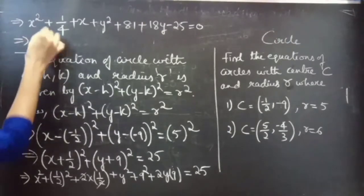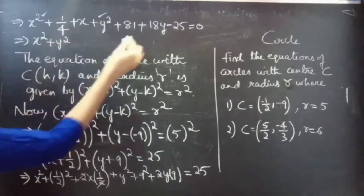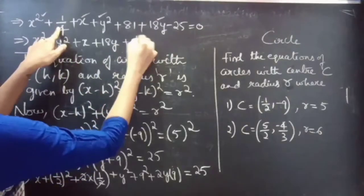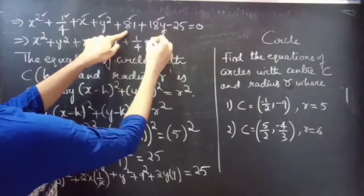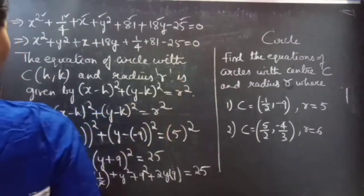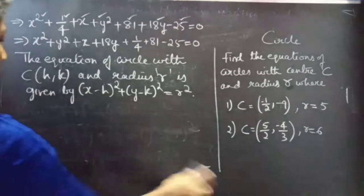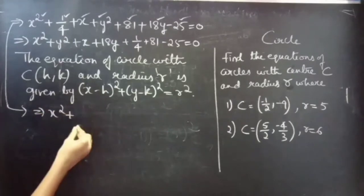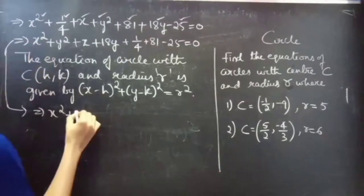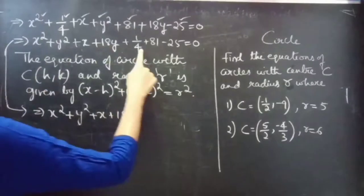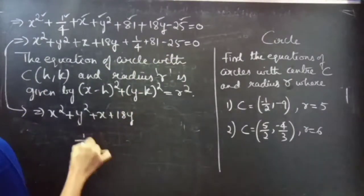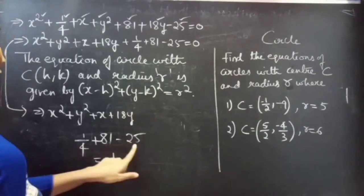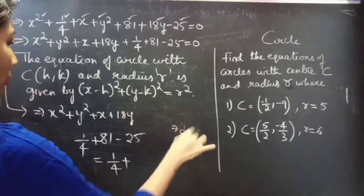We can write this as x² + y² + x + 18y + 1/4 + 81 - 25 = 0. Now we solve the last three numeric terms: 1/4 + 81 - 25.